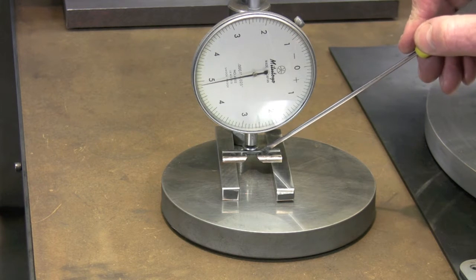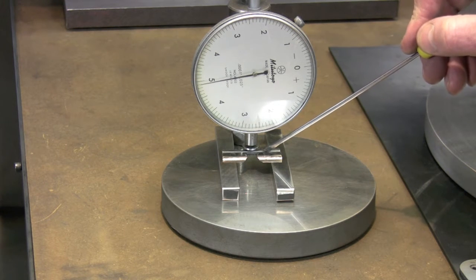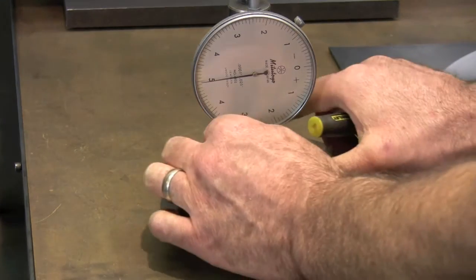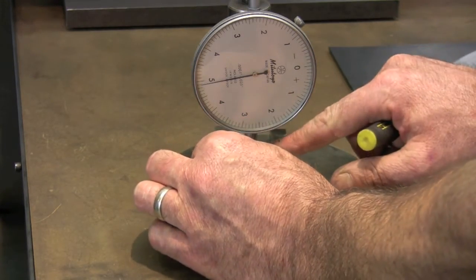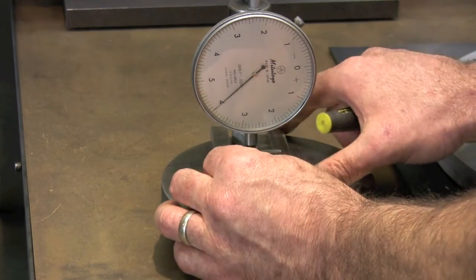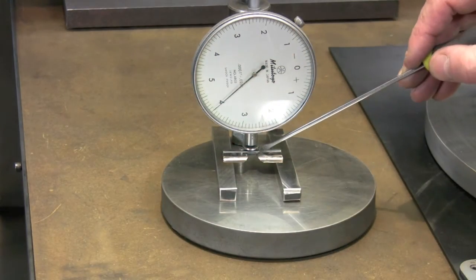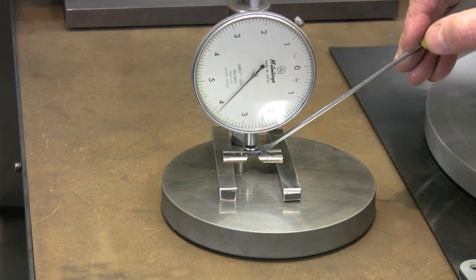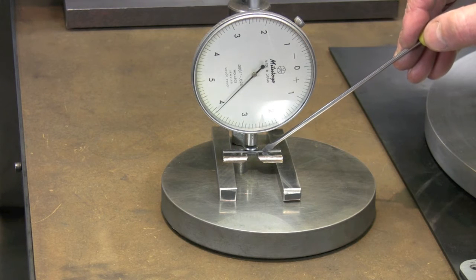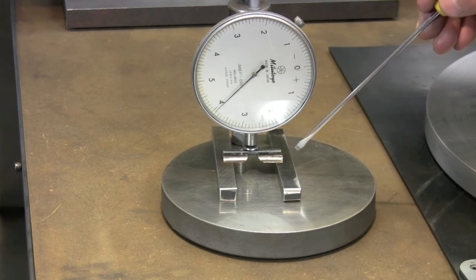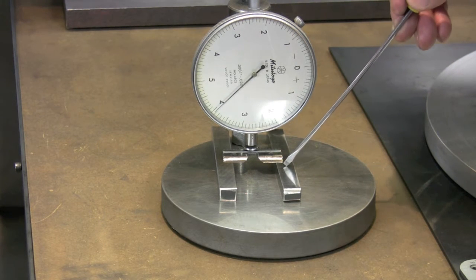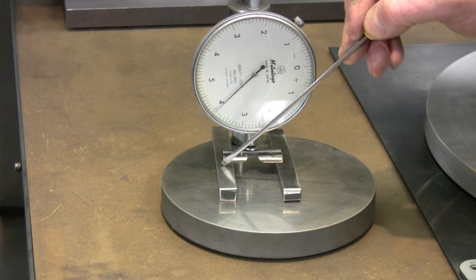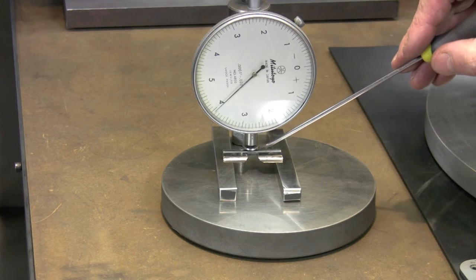See how much that blade flexes. I'm not pushing that hard, probably two, three pounds, something like that. And it's flexing a good tenth. Get it all the way out to the end of the blade, bends really easy. Two, one and a half, two tenths, no problem. I'm going to push on my steel blocks. Nothing moves. Nothing moves. So it is just the flex of that blade.